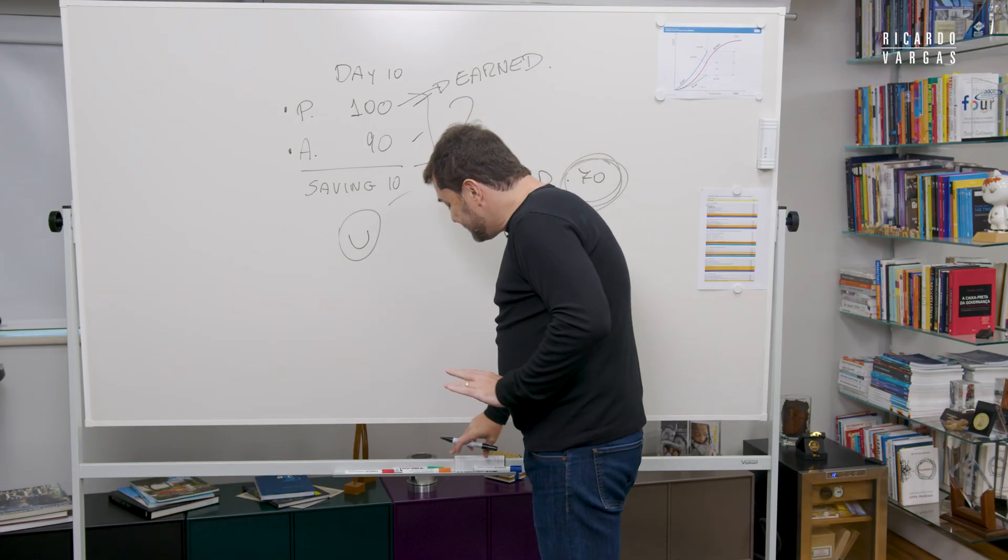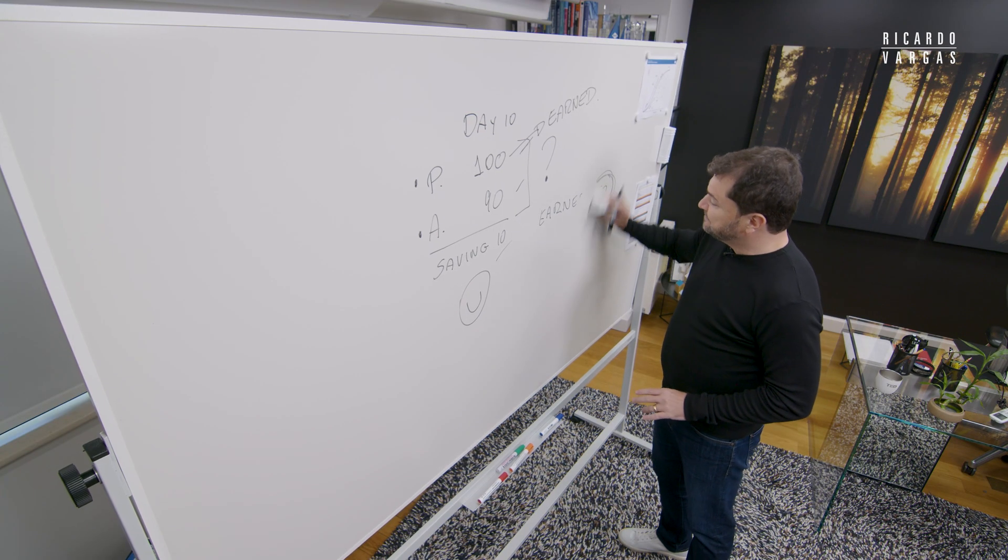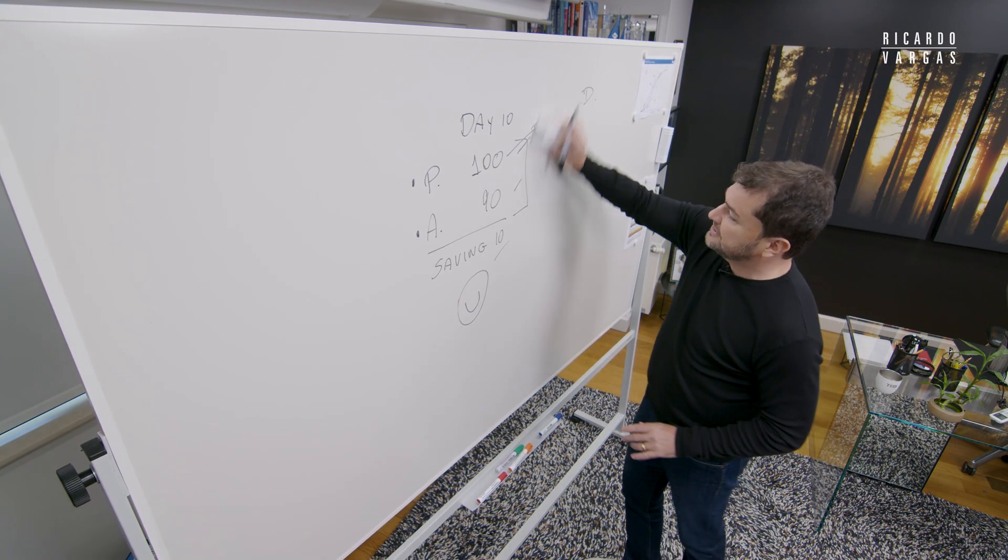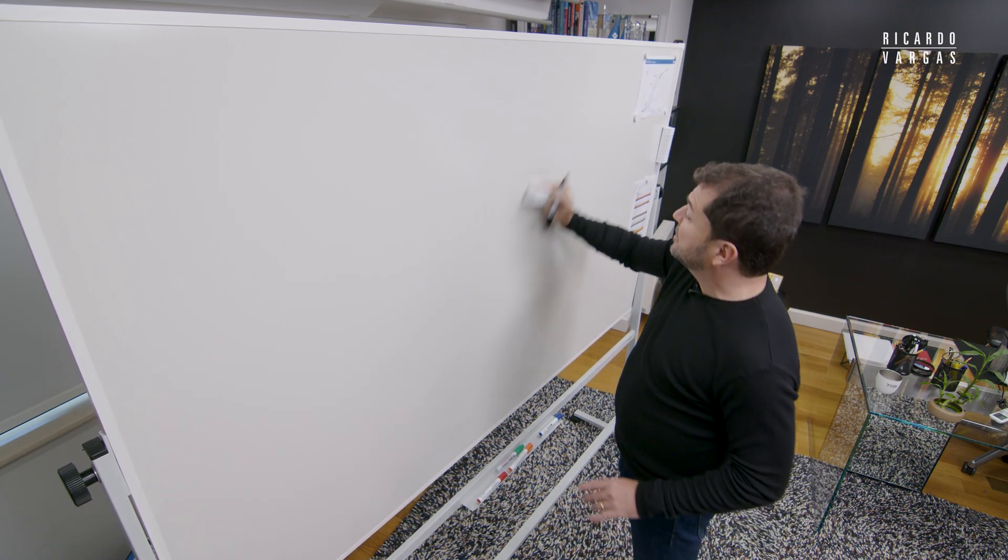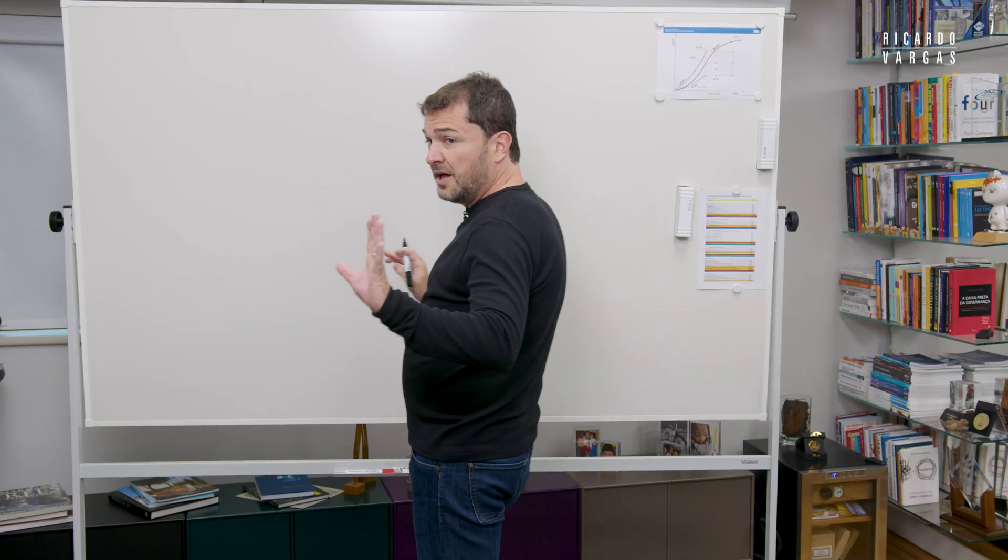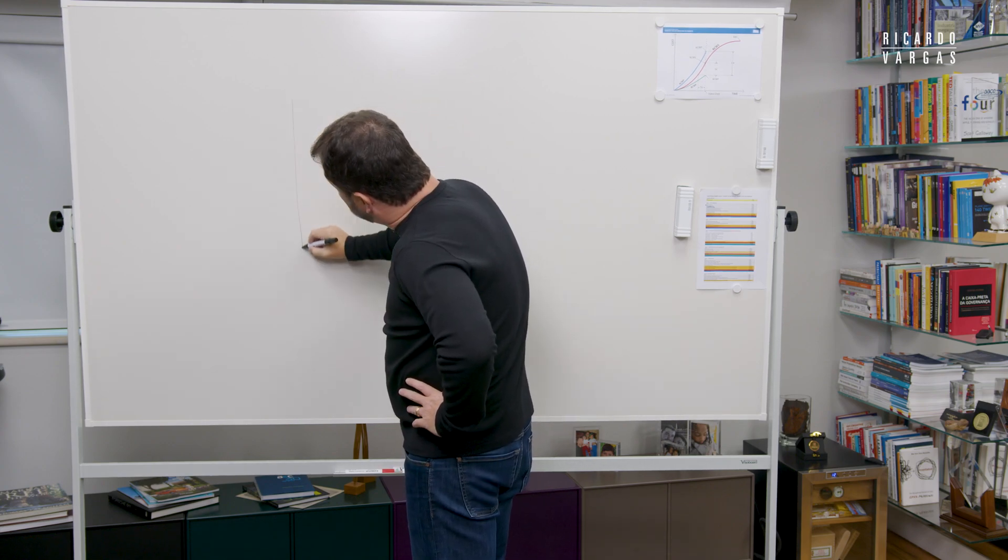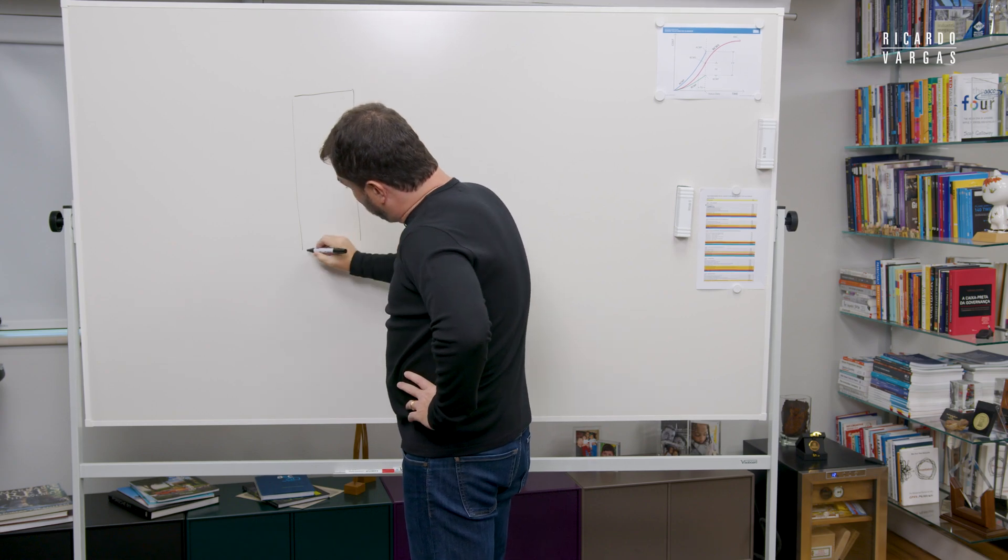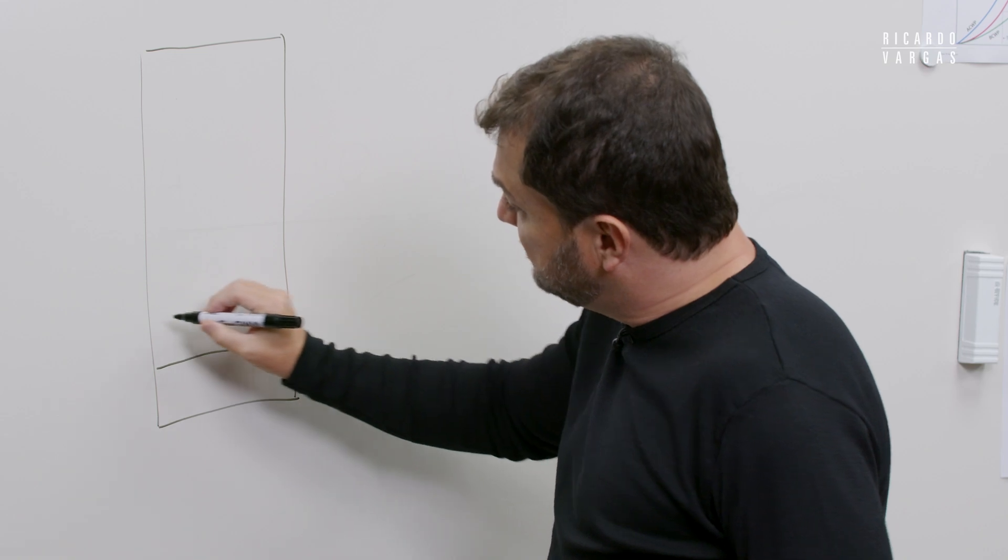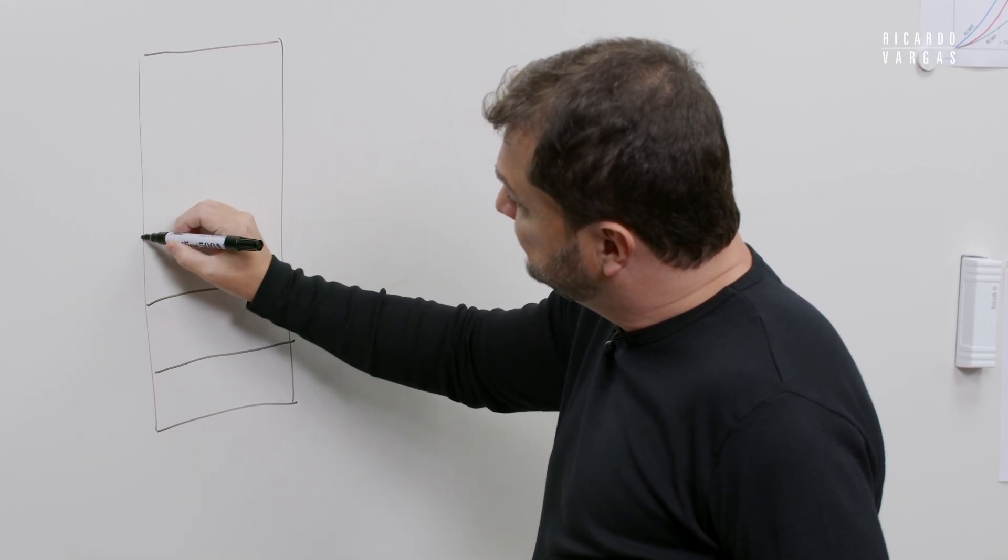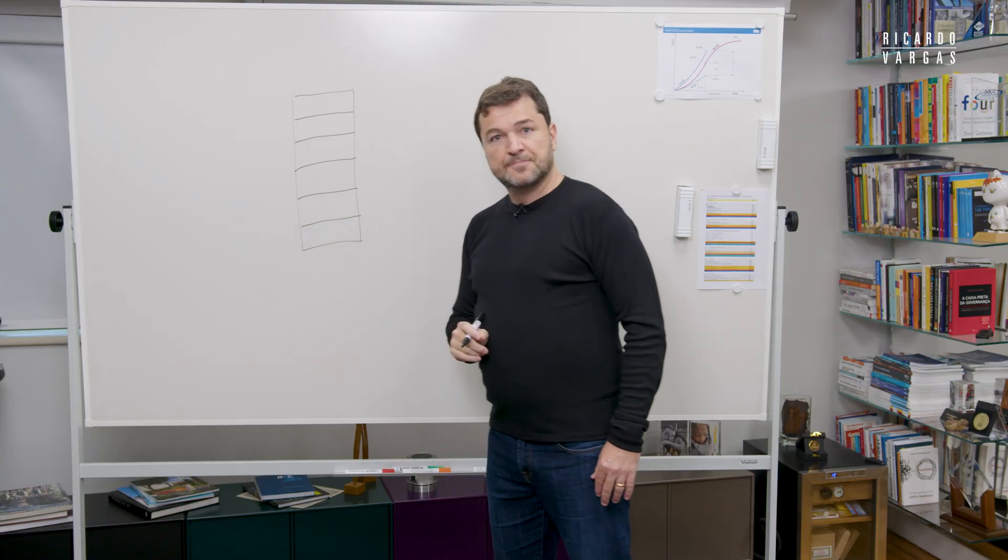Let me give you a super simple example to understand. I always use the same example because it's very simple to explain. Imagine that you need to build a wall, a very simple wall. And this wall, just to make it super simple, is made by one, two, three, four, six bricks.